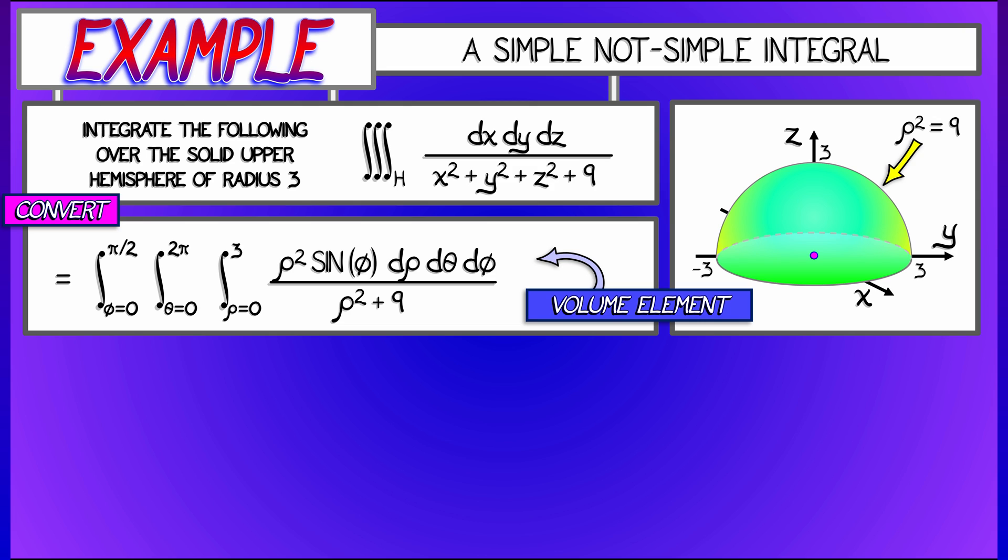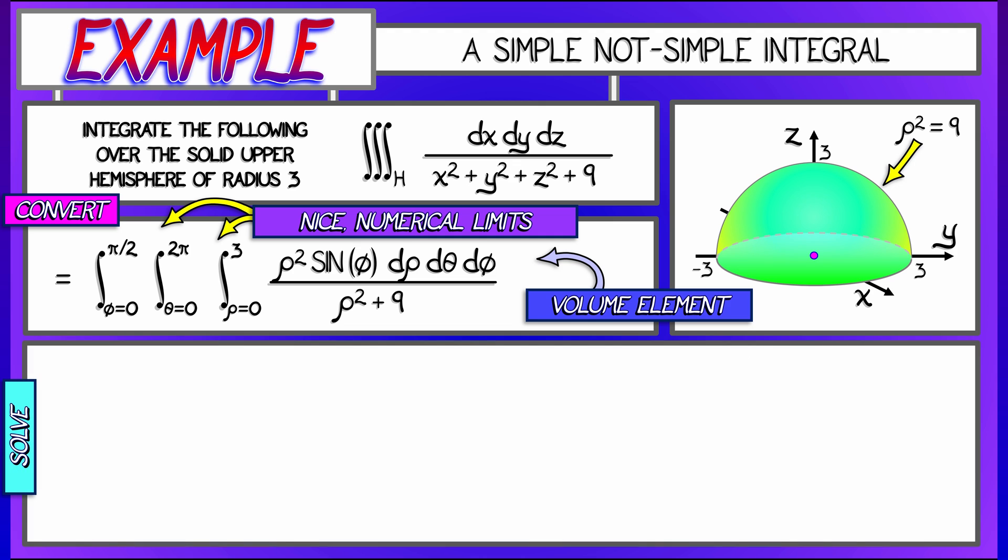Now all I have to do is compute this integral. Because of these numerical limits, Fubini says this is going to break up into the product of three integrals. First, I'm going to have the integral as phi goes from 0 to pi over 2 of sine phi d phi.